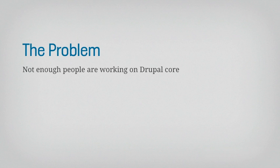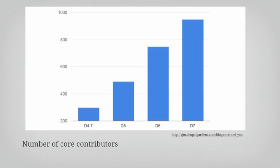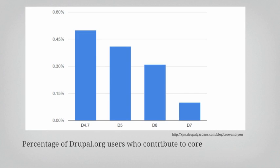The problem being addressed by this project is that there simply aren't enough people working on Core. Looking at this chart, you can see that the number of contributors has risen over time — we had almost 1,000 contributors for Drupal 7. But if you flip this around and look at the percentage of people actually using Drupal in the community, it's gone down dramatically over time. The community has been expanding rapidly, and we're currently down to one-tenth of one percent — one out of every thousand people — contributing to Drupal Core.